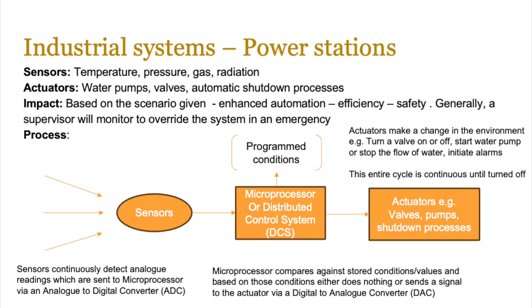The process follows the same pattern: sensors continuously detect analog readings which are sent to the microprocessor via an ADC. The microprocessor checks against programmed conditions and, if they're met, sends a signal to the actuator via a DAC. The actuator then makes a change in the environment — turning a valve on or off, starting the water pump, initiating alarms, and so on — and the entire cycle is continuous. For power stations, the microprocessor is sometimes called a distributed control system, meaning control is distributed over a number of systems, which builds in redundancy and backup. If this term comes up in the exam, it basically means decision-making involving a number of microprocessors.